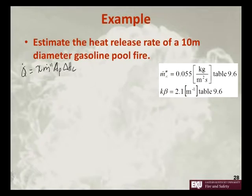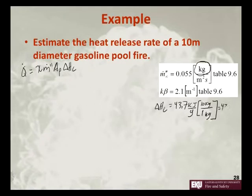We know our heat of combustion for gasoline from earlier in the notes is 43.7 kilojoules per gram. So we convert 1,000 grams over 1 kilogram, and we want to do this unit change because notice this is in kilograms. This is equal to 43.7 times 10 to the third kilojoules per kilogram.